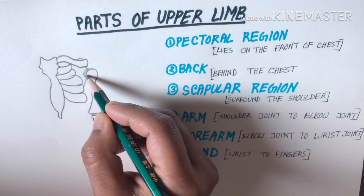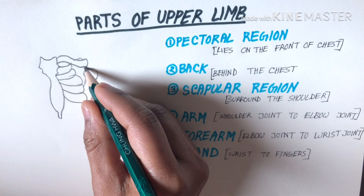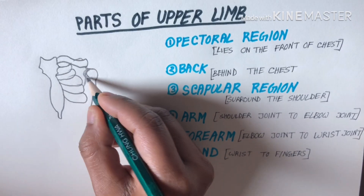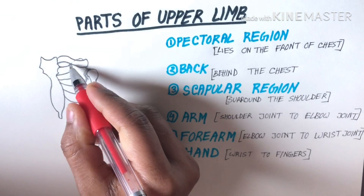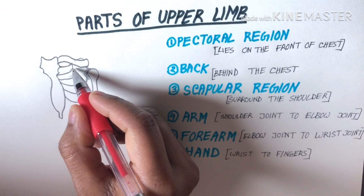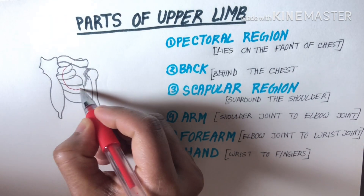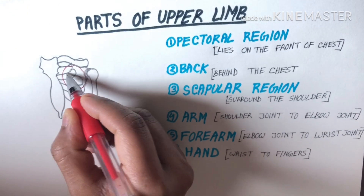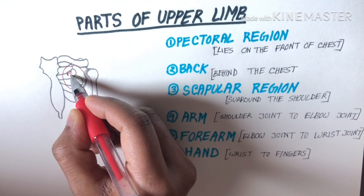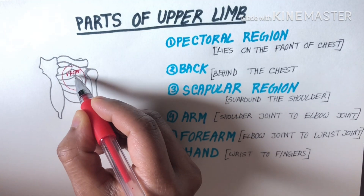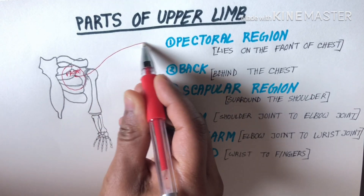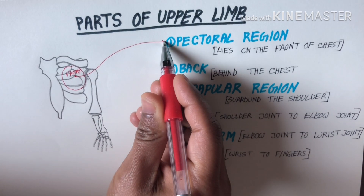Scapula. So now this is the front of the chest — this is our pectoral region. The pectoral region lies on the front of the chest.